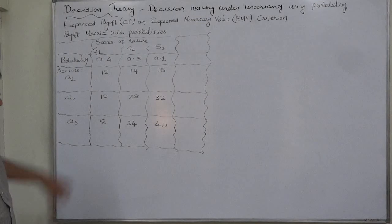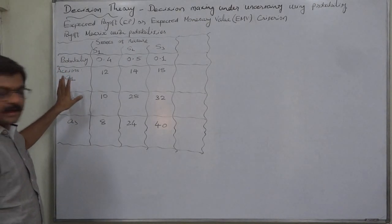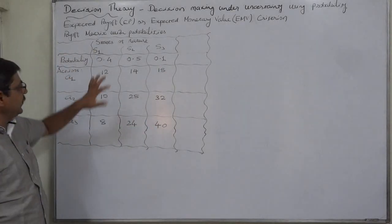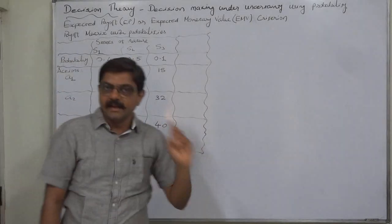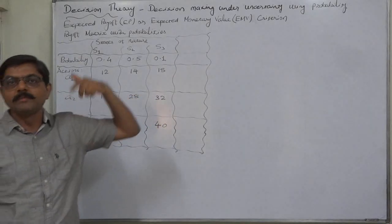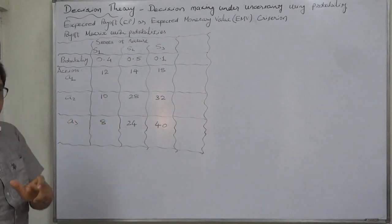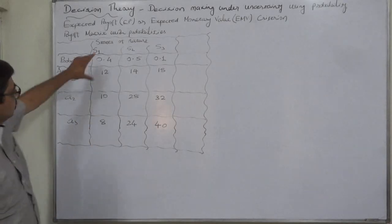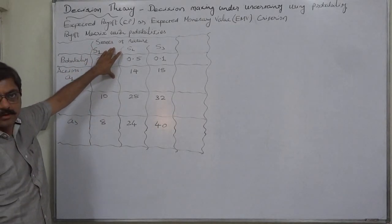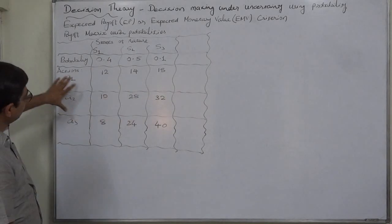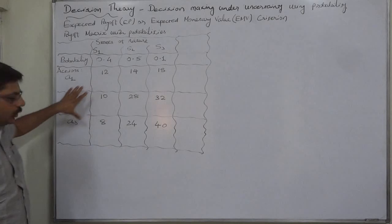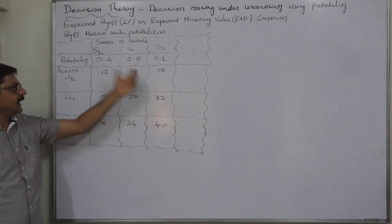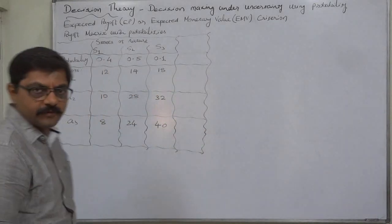In the case of a payoff matrix, the two important elements are actions (also called alternatives, strategies, or acts) and states of nature. States of nature are mutually exclusive and exhaustive. Similarly, in a probability distribution, the random variable is made up of all possible mutually exclusive and exhaustive outcomes. The random variables represent possible outcomes of all actions, and the probabilities correspond to the possible states of nature.